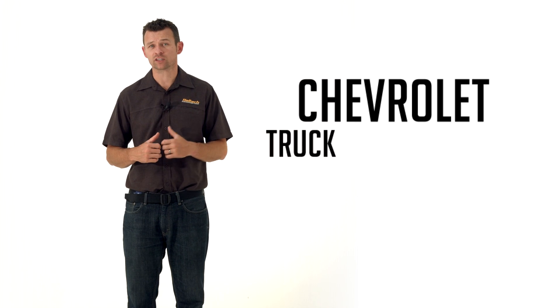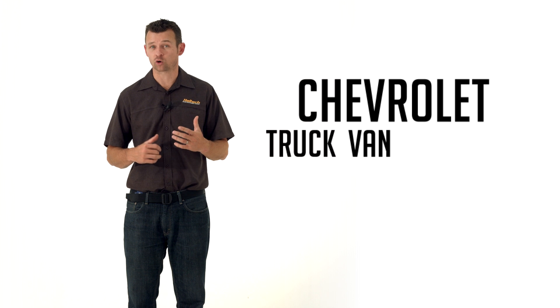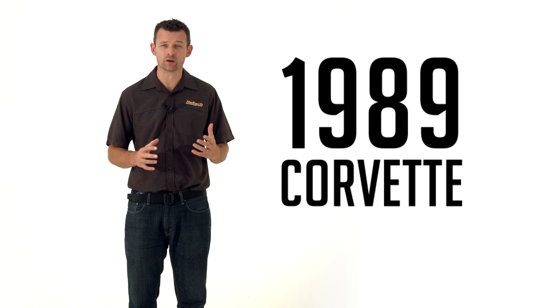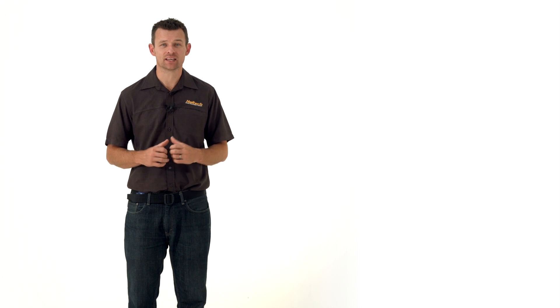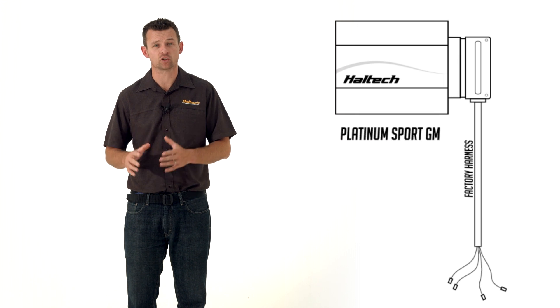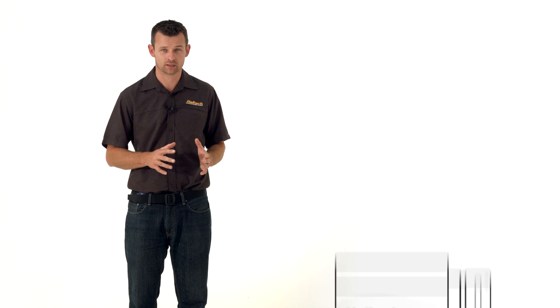Now incidentally for our North American customers, if you've got a Chevy truck or a van or an S10 pickup from 1987 to 92 or an 86 to 89 Corvette with TBI or TPI, then this same Platinum Sport GM ECU will plug directly into your GM wiring harness. Make sure to check the full list of applications in the description below.